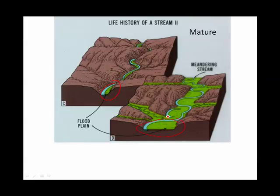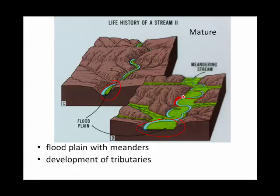The floodplain is called 'plain' because it's flat, and 'flood' because it's covered in water during floods. If you have a floodplain, the stream starts to loop along it. These loops are called meanders. When a meander hits the side of the bedrock, it erodes it by lateral erosion. We're also starting to form some tributaries. So floodplain with meanders, development of tributaries, and lateral erosion are the hallmarks of a mature river.